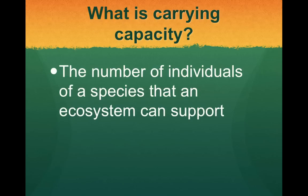Now moving on to carrying capacity. Carrying capacity is the number of individuals of a species that an ecosystem can support. Just like the heater could only hold so many people in that area, carrying capacity defines the maximum a habitat can sustain. We're going to look at some practice examples — you can pause these at any time.